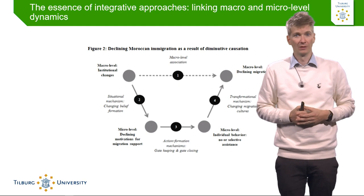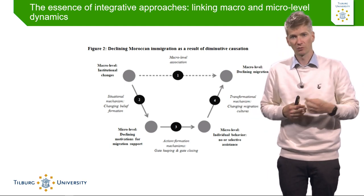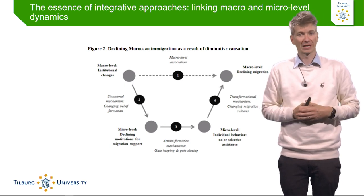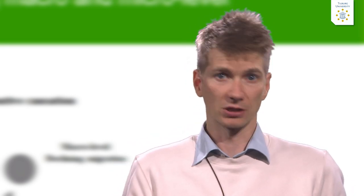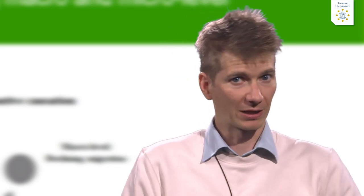Fewer people migrated from Morocco to the Netherlands — that is the transformational mechanism — namely that the migration culture in Morocco changed because of the declining support from the already existing Moroccan community in the Netherlands. So Coleman's Boat is a very interesting tool for investigating any macro level association, whether between policy changes and support for artists, changing dietary behaviour in the general population, or international migration — explaining how macro level associations can be understood through micro level mechanisms that feed back to the macro level.